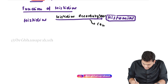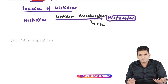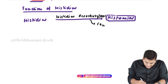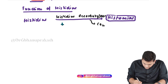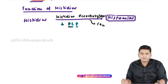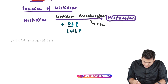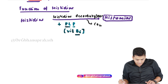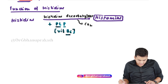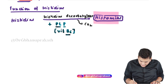As we have discussed in the general amino acid decarboxylation video, whenever we perform decarboxylation of an amino acid we require the active form of vitamin B6, which is pyridoxal phosphate — PLP. This is how histidine converts into histamine.